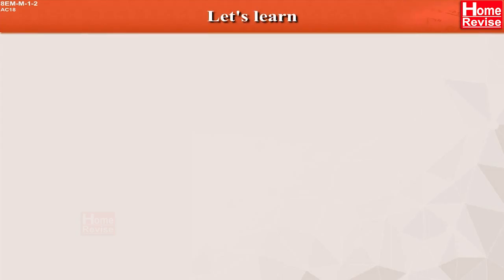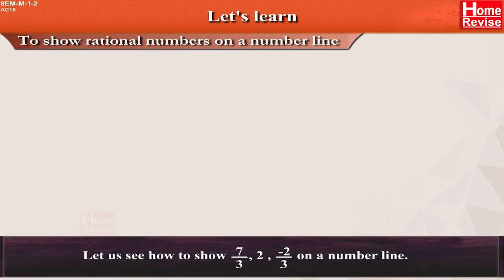Let's learn to show rational numbers on a number line. Let us see how to show 7 upon 3, 2, and minus 2 upon 3 on a number line.